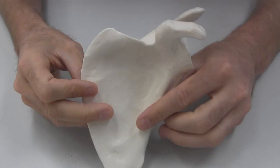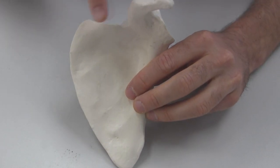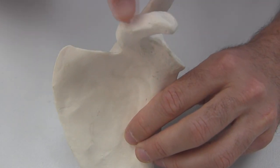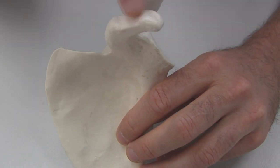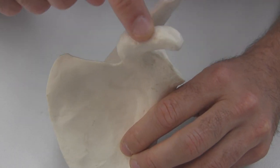The scapula has a lot of different processes sticking out of it. This one at the front, as you feel the front of your shoulder, is called the coracoid process. This becomes important for a lot of different muscle origins and attachments, and also a lot of different ligaments attach at this point here. So this is the coracoid process.